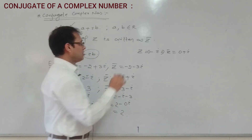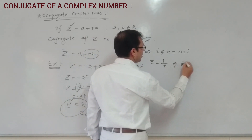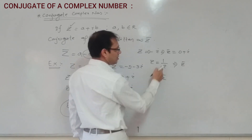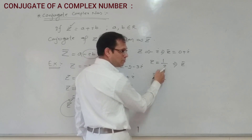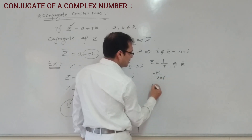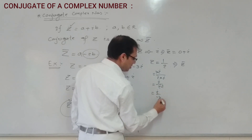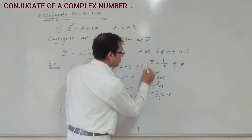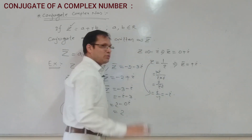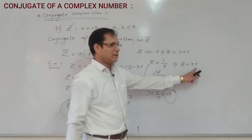Suppose Z is equal to 1 by i. We can convert this: multiply numerator and denominator by i, giving i by i squared, which equals i by minus 1, that is minus i. So Z bar is equal to plus i.